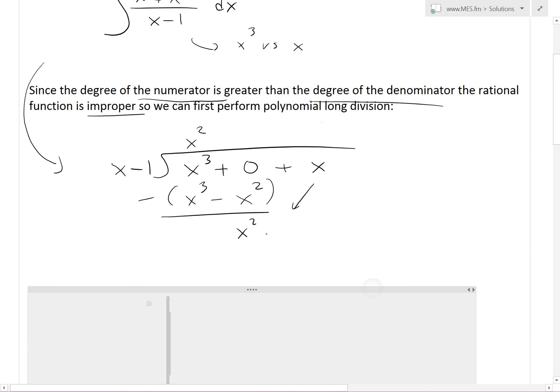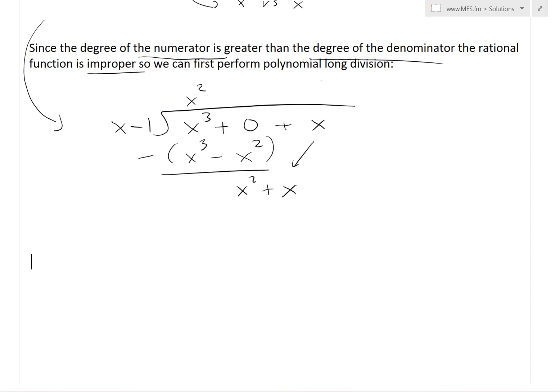Now we bring down the x term, giving us x² + x. We multiply x by x to get x², and x times -1 gives -x. We subtract: the x² terms cancel, and x minus negative x gives us 2x.